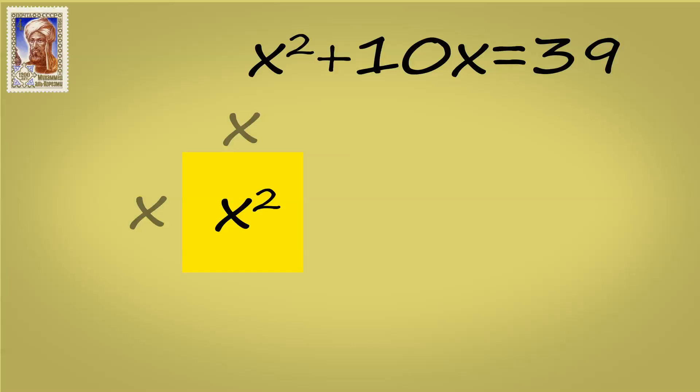And then he went and he said, okay, well, I've got another square here that has a length of 10 and a width of x. Because that would give me 10x.